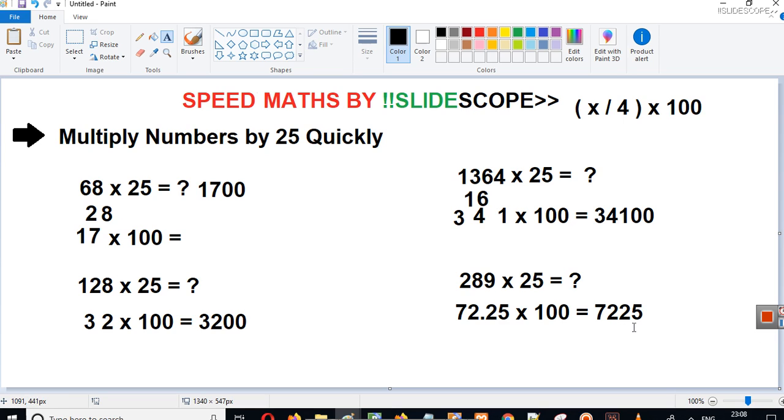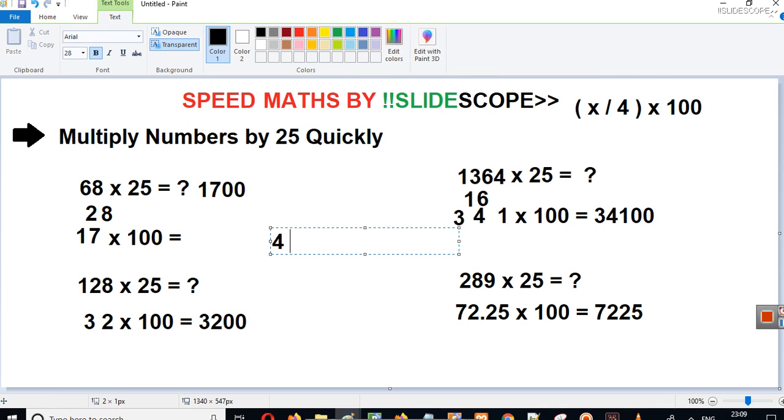Because multiplying by 10, multiplying by 100, multiplying by 1000 is really easy. You just have to add zeros. The trick is really simple. What is 4 into 25? We all know it's 100. So 4 divided by 4 is 1 into 100 is 100. So you can see, from here this simple trick comes.